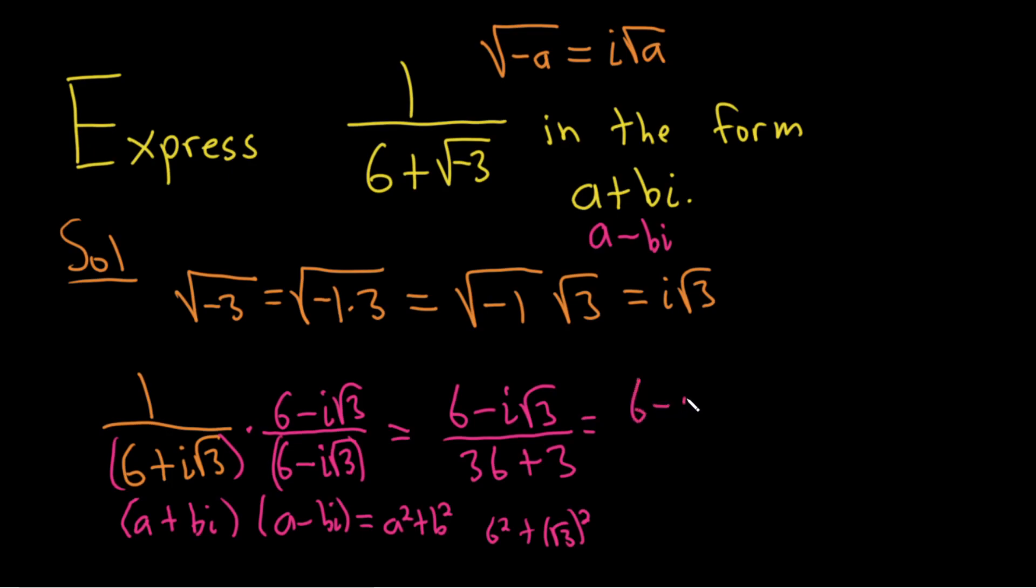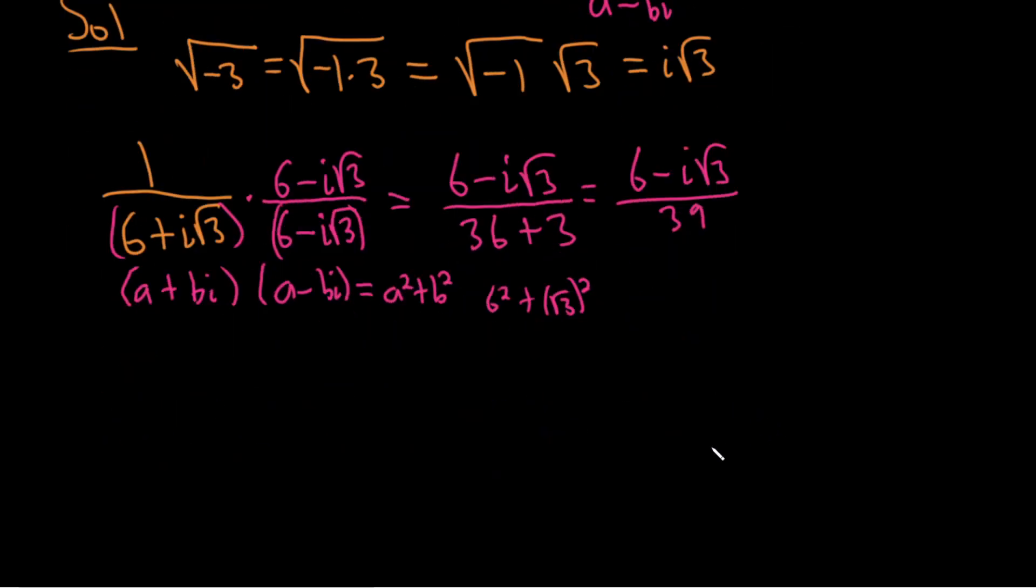Okay, let's keep going. This is 6 minus i square root of 3 over 39. At this point, we can just break it up. It'll be 6 over 39. Then minus i square root of 3 over 39, because it's this over this, then minus, and then this over this.